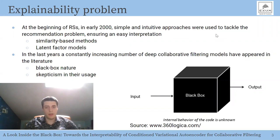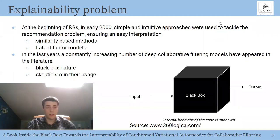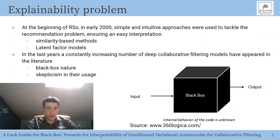At the beginning of recommendation systems, simple approaches were proposed by researchers. Similarity-based methods were introduced first, then latent factor models dominated for many years. Since these methods are intuitive and simpler in architecture than deep models, they are also easy to interpret. However, in the last few years, with the rise of deep learning, a constantly increasing number of deep collaborative filtering models have appeared. These models can be very accurate thanks to their high non-linearity, but they are black boxes — they take input and produce output without any explanation of the approach used.